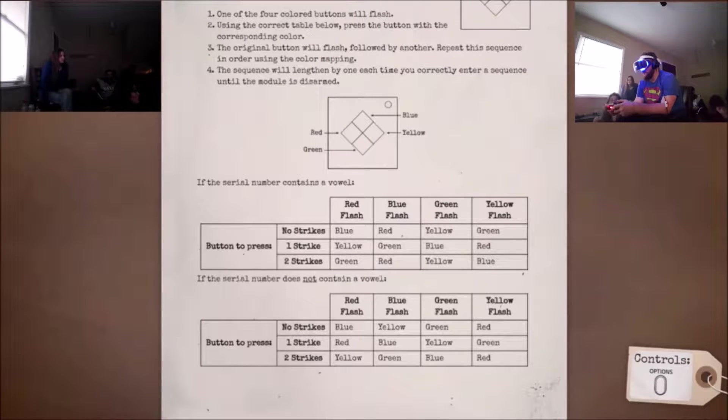Where's the serial number? On the top. No, it's in different spots, dude. I feel like I'm in surgery right now. E, yes. It does contain a vowel? Okay. So, let's see. Four color buttons will clash using the correct table below. Red. Red is the one. It's red. Yeah. Blue. Cool.